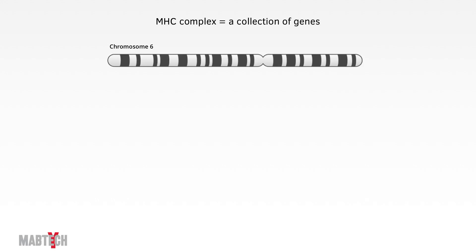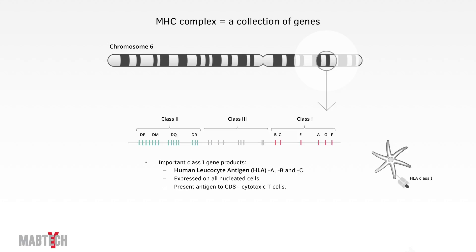As said earlier, the T-cell receptor recognizes the combination of peptide and MHC. The MHC complex is a collection of genes on chromosome 6. In humans, the gene products of the MHC complex are called human leukocyte antigens, also known as HLA.